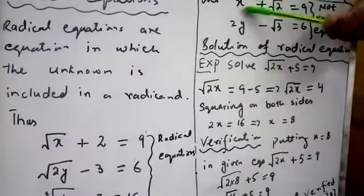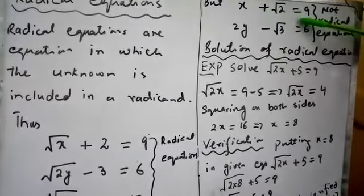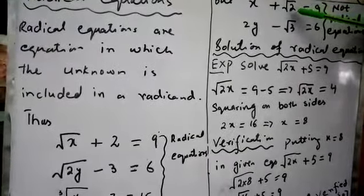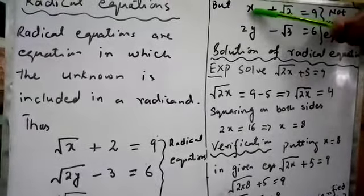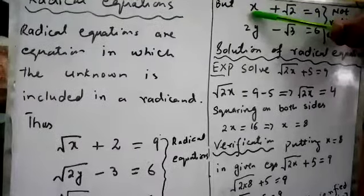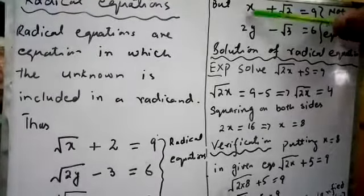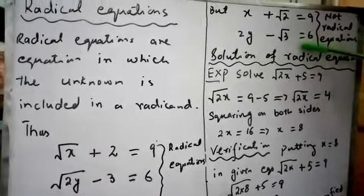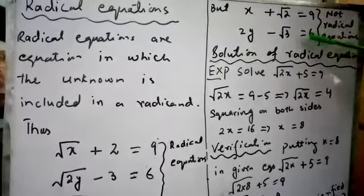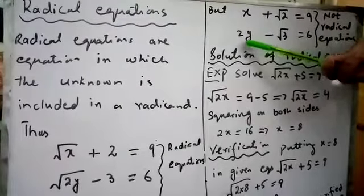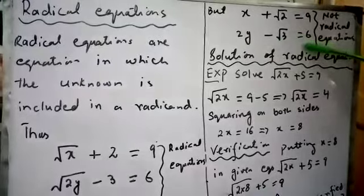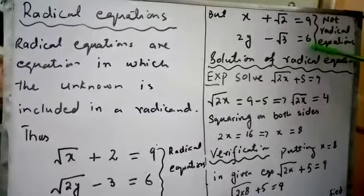But x plus square root 2 equals 9 is not a radical equation because here radicand is 2, not unknown. Unknown is without square root or without any root. Similarly, 2y minus square root 3 equals 6 is not a radical equation because here y is not in radicand form.